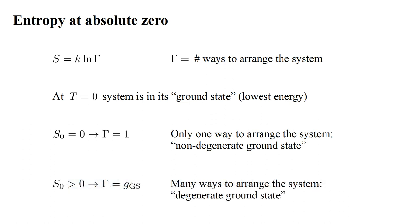Other substances may or may not have degenerate ground states. This means that gamma equals an integer G G S greater than one, the degeneracy of the ground state. Then S zero is greater than zero.